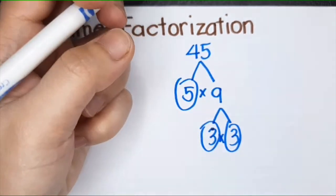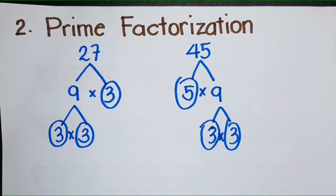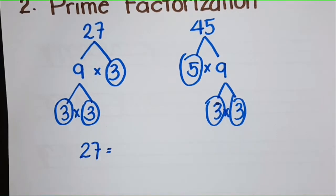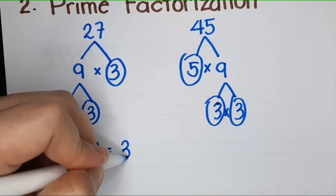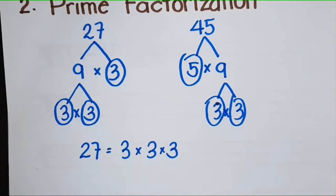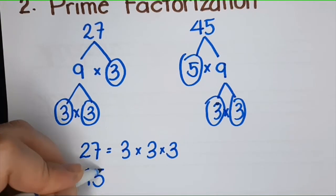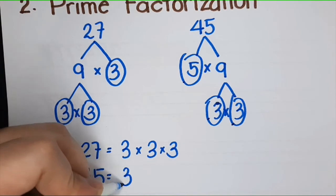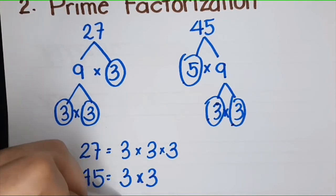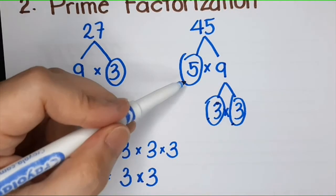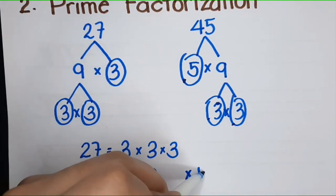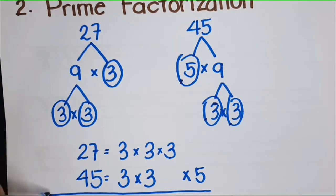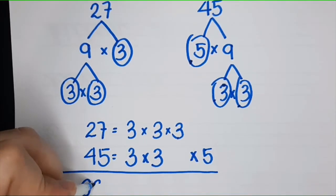You stop here because it's already a prime number, and 9 can still be written as 3 times 3. Then you stop because they are all prime numbers. How do you find the GCF using prime factorization? 27 equals—you write all the prime factors of 27—so it's 3 times 3 times 3. What about 45? It is 5 times 3 times 3. Don't align them because they are different. Here's how you find the GCF of 27 and 45.